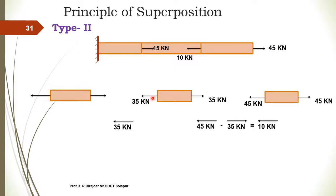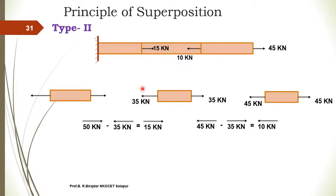For the third body, 35 kN is already acting towards the left. When we join the first and second body, the resultant force of 15 kN should act towards the right, meaning this force must be larger. So we apply 50 kN: 50 towards the right minus 35 towards the left gives a resultant of 15 kN towards the right.